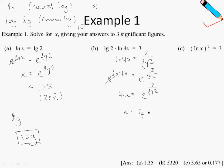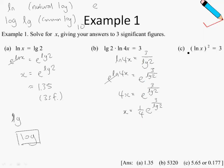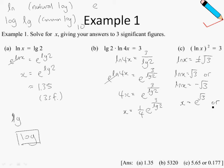Let me show you how the log and exponential buttons look on the calculator. The log button is here, and the exponential button requires pressing the second function key and then the ln button. For the last example: (ln x)² = 3, so ln x = ±√3. There are two cases: ln x = √3 gives x = e^(√3), and ln x = −√3 gives x = e^(−√3). Pressing these into the calculator gives x = 5.65 or x = 0.177, to 3 significant figures.